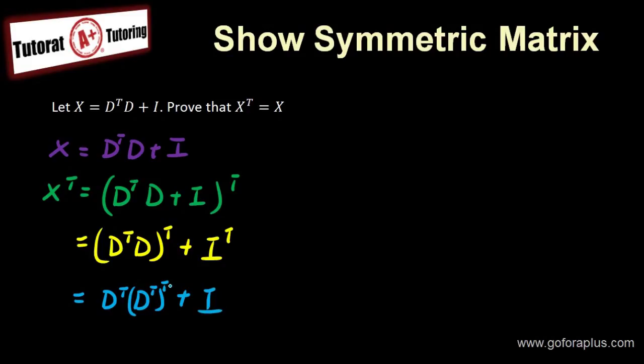Now what is dt transpose transpose? It's just d. So this is going to give me equals to dtd plus i.